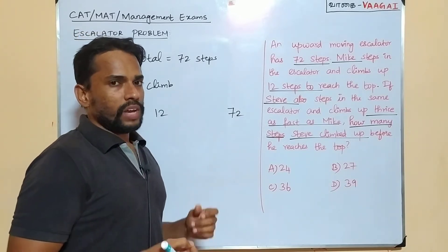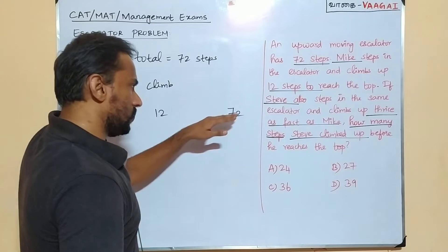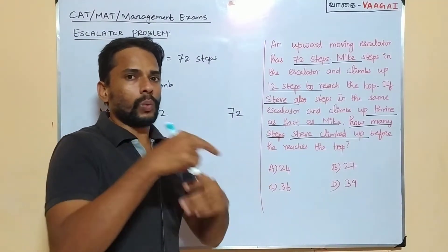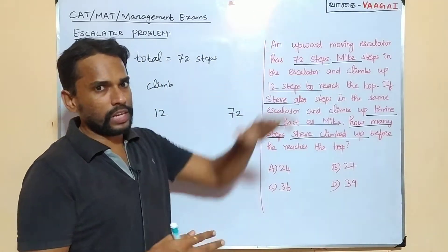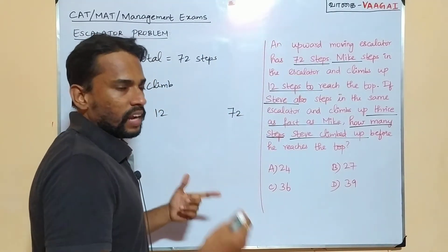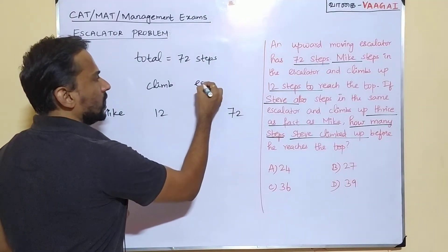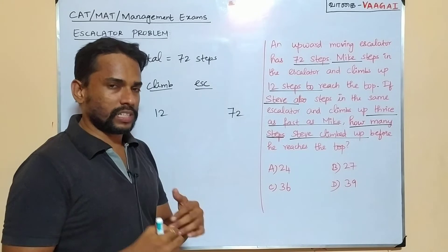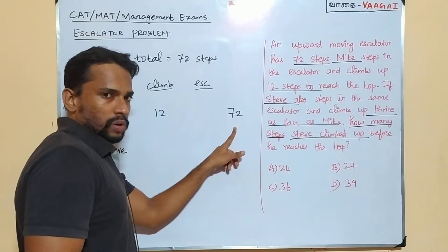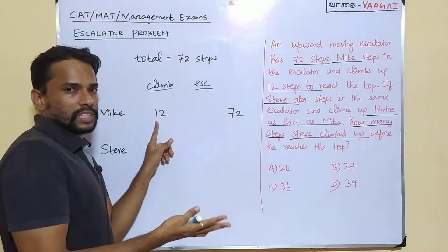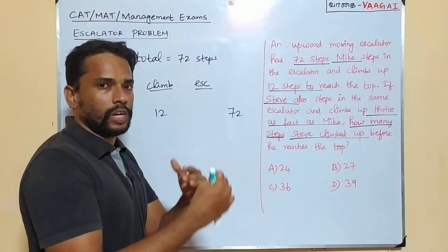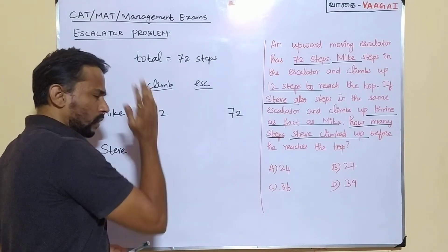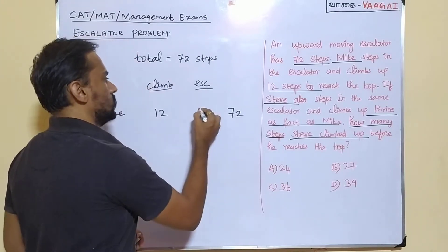Now, one thing we have to remember here properly. Out of 72 steps, Mike is able to climb up 12 steps. Within the 12 steps itself he is able to reach the top. In that sense, what is the meaning we can understand is that the escalator is taking him the remaining steps. The escalator has traveled the remaining steps. That's the meaning. Out of 72, if Mike is climbing up 12 steps, the other remaining steps is going to be traveled by the escalator. The remaining steps is going to be very simple 72 minus 12, which is 60.